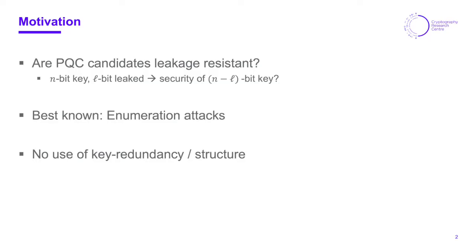In this work we investigated the question if post-quantum candidates are leakage resistant. In an informal sense, if you have an n-bit key and l-bit of this key get leaked, then we say a system is leakage resistant if it offers the security of an n minus l bit key, which is the best one can hope for. We know from classical schemes like RSA that this is not the case.